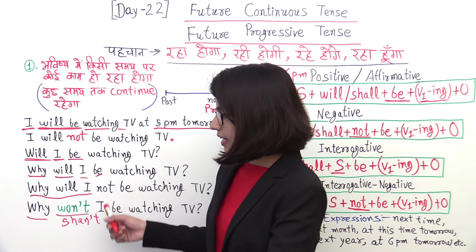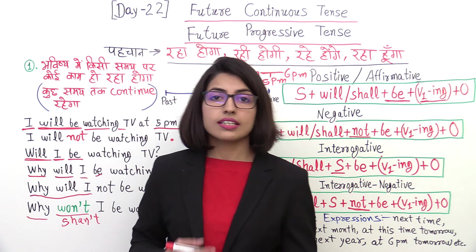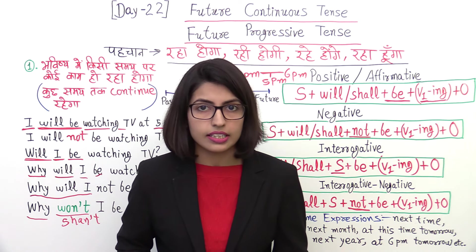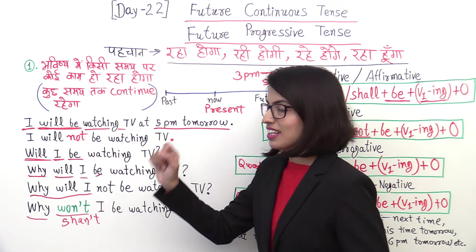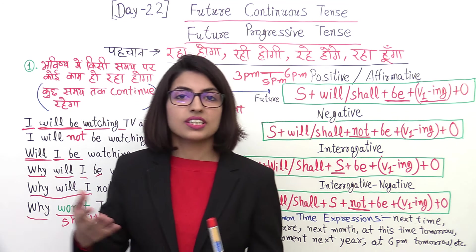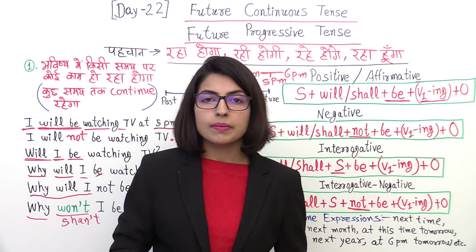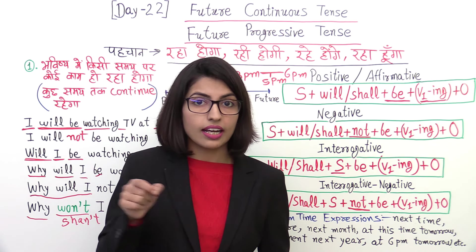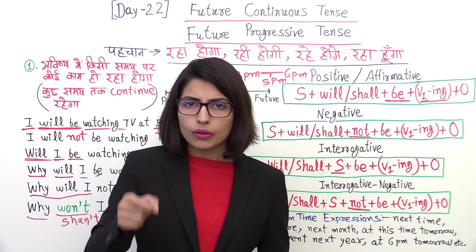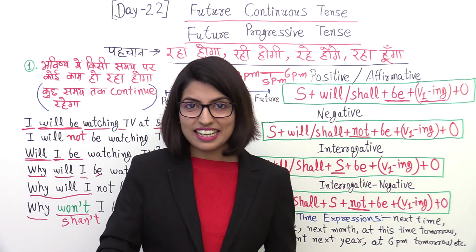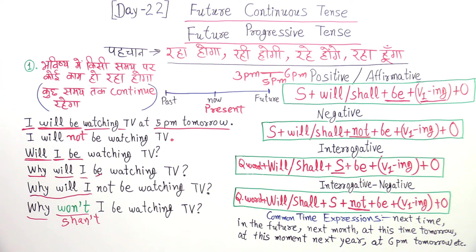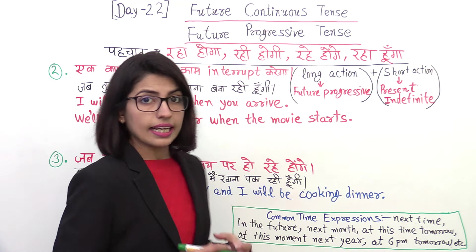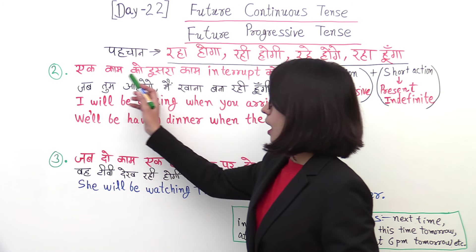Now you have learned how to make sentences — positive, negative, interrogative, and interrogative negative. I tell you this in every tense and I have done so here as well. So far you have learned the most important and most commonly used point. But as I told you, there is also the situation when one work is happening in the future and another work interrupts it. That is the second point.